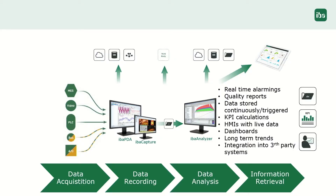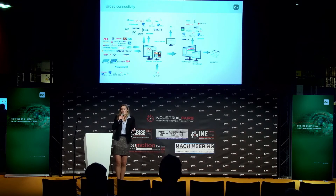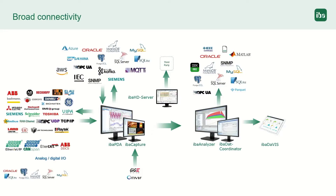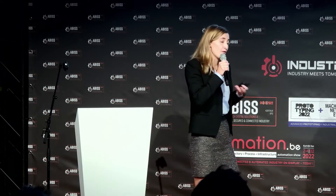Third-party integration is also very important for IBA. We can import and export data, and have developed multiple different interfaces to connect to clouds, databases, and third-party tools — for example Oracle, SQL, MQTT, Kafka and so on. A strong point of the IBA system is its connectivity. We have very broad connectivity — it doesn't really matter what kind of systems, manufacturers, PLC types, or sensors you are using. The chances are big we can connect to it, regardless of the manufacturer, interface, or protocol.